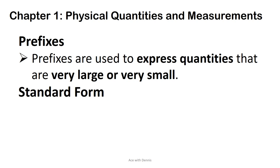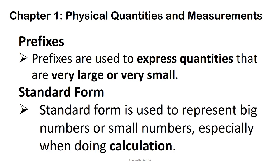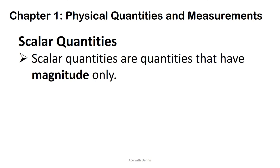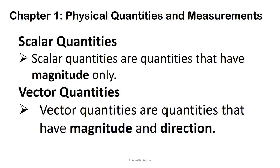Standard form: Standard form is used to represent big numbers or small numbers, especially when doing calculation. Scalar quantities are quantities that have magnitude only. Vector quantities are quantities that have magnitude and direction.